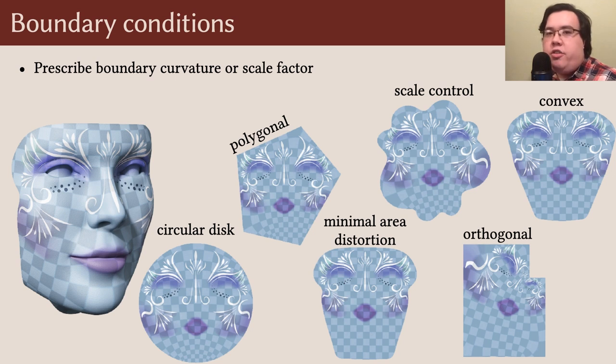I should mention that we can also specify target curvatures or scale factors on mesh boundaries, mirroring the degrees of freedom of smooth conformal maps. The key idea is to make two copies of the mesh, and glue them along the boundary, resulting in a symmetric closed surface without boundary.